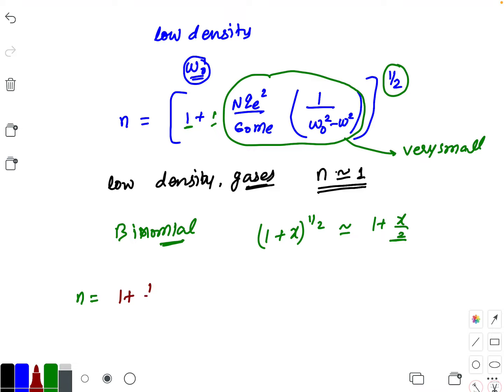1 plus 1 by 2 of n u e square divided by epsilon naught multiplied by m e, and this multiplied by 1 over omega naught square minus omega square. This is the proof which we are looking for.